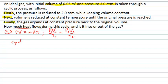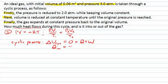This is a cyclic process, and that has a very important consequence for the first law of thermodynamics. It tells us that the change in internal energy throughout the entire cycle must be zero, because we start and finish in the same state with the same internal energy. So Q plus W equals zero, meaning the heat that flows into the gas must equal the negative of the work done on the gas.